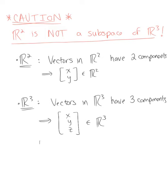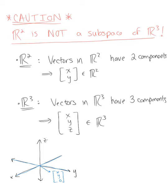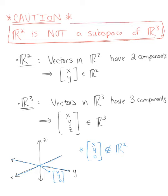Thinking about this graphically: here's our z-axis, x-axis, and y-axis. You may try to argue that you can see the xy-plane down here, and you'd be correct. However, a vector that lives in the xy-plane in three dimensions would be defined as (x, y, 0) — it still has three components, which means it will never be an element of R2. So keep in mind: R2 is not a subspace of R3, because the vectors have different numbers of components and it's not closed under addition or scalar multiplication.